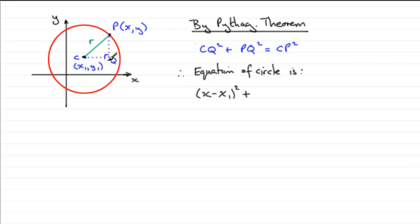Well, PQ will be the difference in the y-coordinates. We can see that the y-coordinate of P is y, and the y-coordinate of Q, because it's on the same horizontal as C here, will be y1. So we've got this distance PQ as y minus y1, but then we've got to square it. So we've got y minus y1 all squared. And this is equal to CP all squared. Now CP, you can see, is the radius of the circle, so this is going to be equal to R squared.